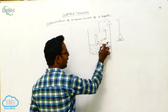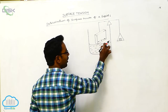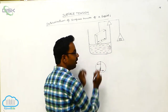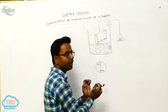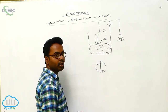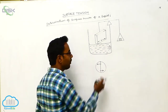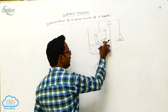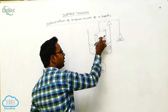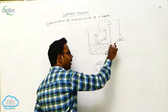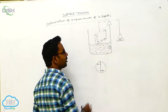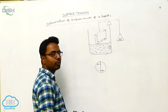The left part pulls the right part and the right part pulls the left part along the length of the rectangular plate in a downward direction. This total force acts along length L towards the left direction on one side, and along length L towards the right direction on the other side. Totally, this glass plate experiences a downward force along a total length of 2L.